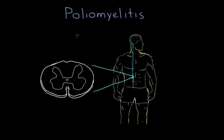How does the poliovirus cause poliomyelitis? How does it infect a person and end up causing the symptoms that we see, which is muscle damage, muscle paralysis, that sort of thing?